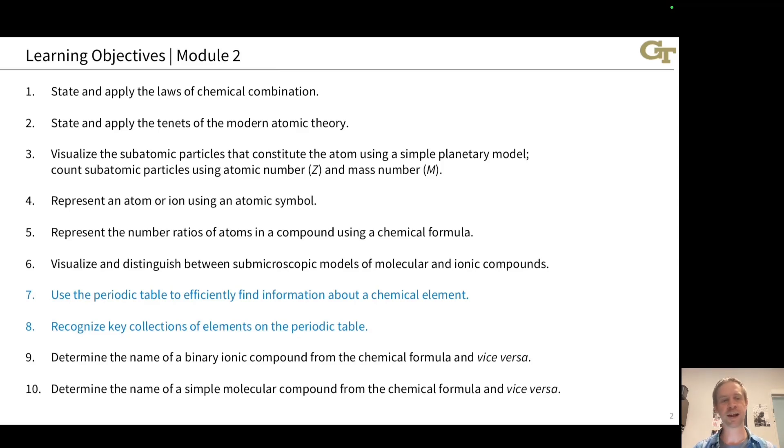Our two learning objectives for today are to use the periodic table to efficiently find information about a chemical element, and then recognizing key collections of elements on the periodic table specifically associated with the rows and columns. We've got particular terms for the rows and columns, and the elements within have some interesting tendencies that we'll take a look at toward the end of this video.